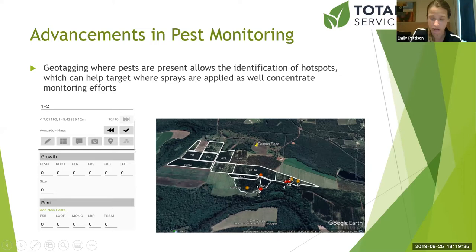Here we have a GPS map for fruit spotting bug on a farm. Five fields of view were found with fruit spotting bug, shown here on the map.